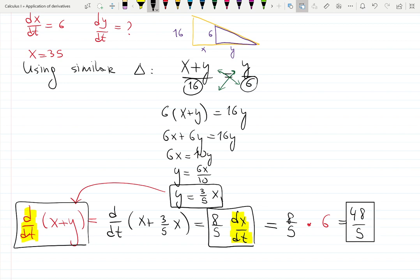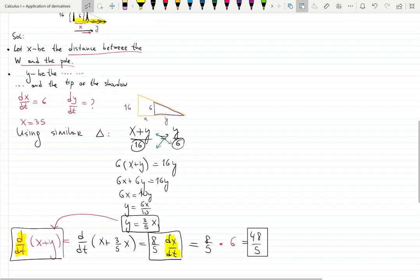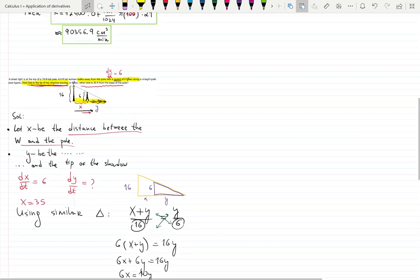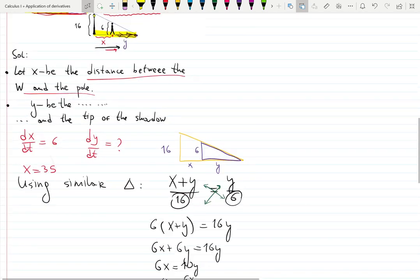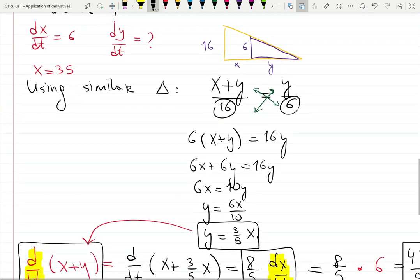So it is interesting to notice that the rate of change of the tip of the shadow is independent of the position of the woman, so it's also independent of the value of x. As you can see, it doesn't really matter what my x is. That's how physics works. And also be careful with units, but in this case everything was pretty straightforward. We are working with feet per second, so I can say that the answer is also feet per second.